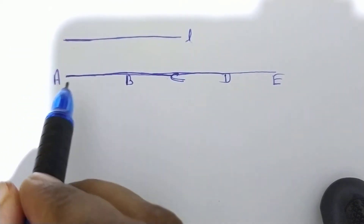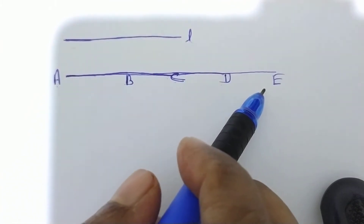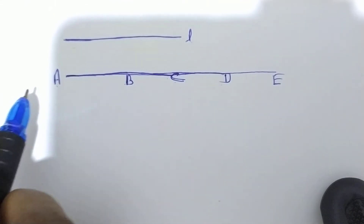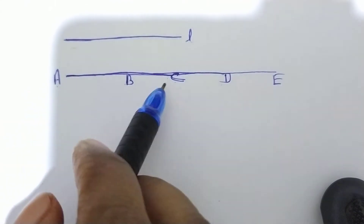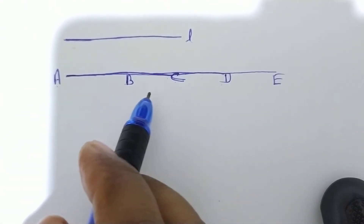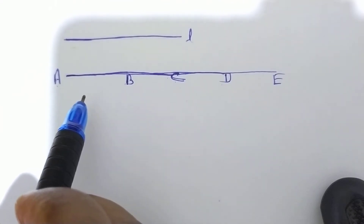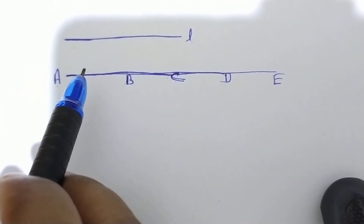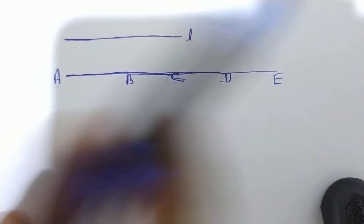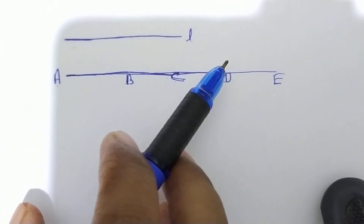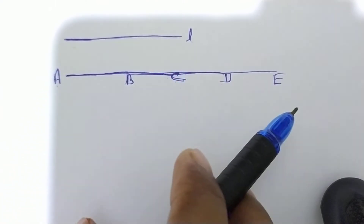Hamein yeh proof karna hai ki A, B, C, D, E yeh saare points collinear hain. Dekhne mein toh yeh saare collinear lag rahe hain, but hamein proof karna padega ki kaise yeh collinear hain. Given: lines AB, AC, AD and AE are parallel to line L. To prove: A, B, C, D and E are collinear.